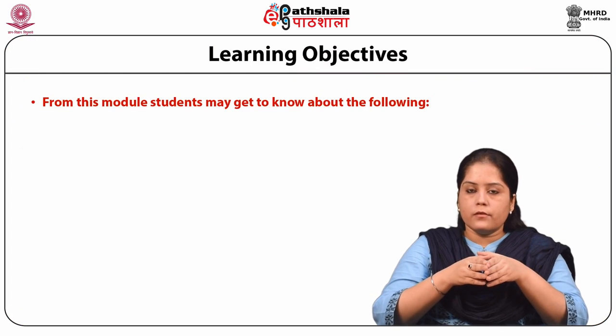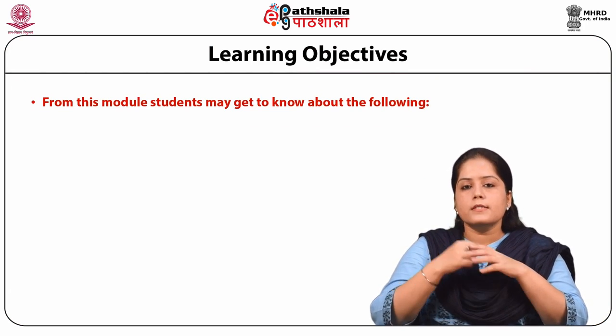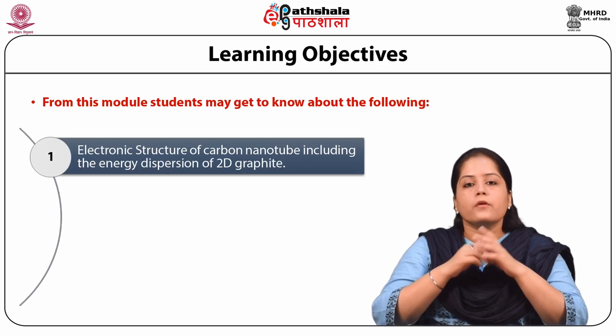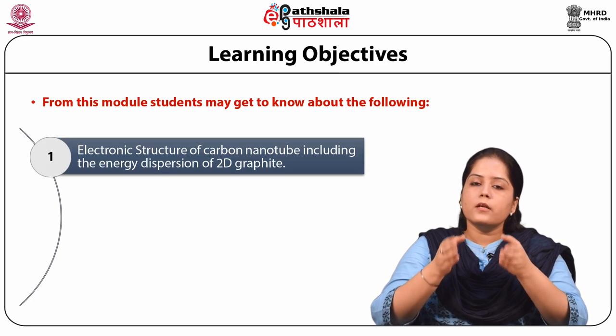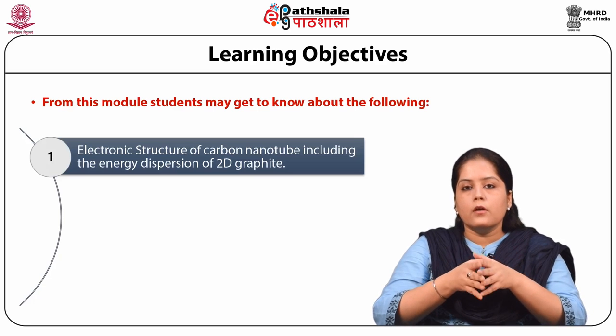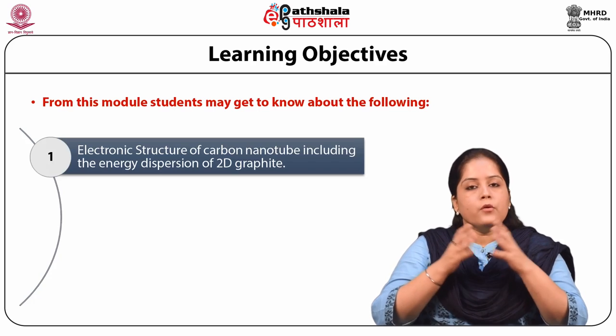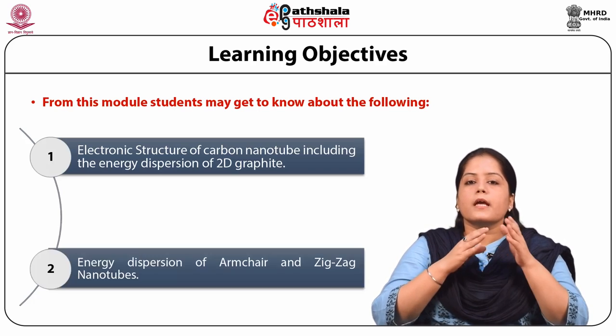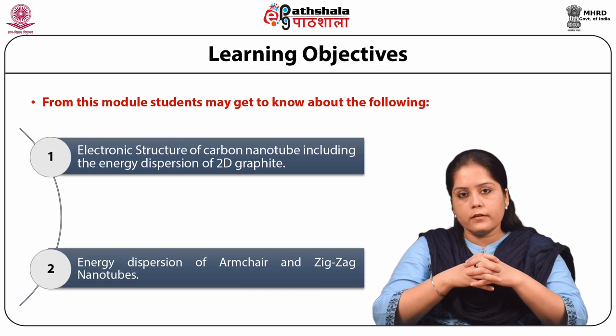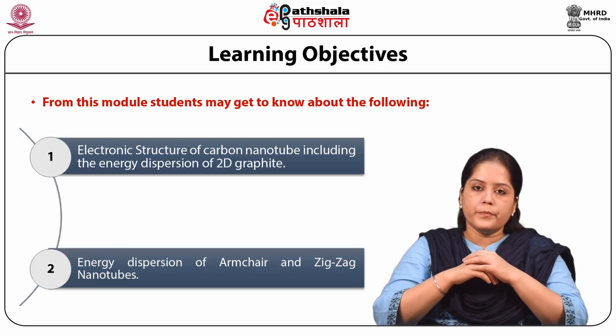Today we are going to discuss the module Electronic Structure of Carbon Nanotube from the paper Physics at Nanoscale. The learning objectives of this module are: first, the electronic structure of carbon nanotube including the energy dispersion of two-dimensional graphite will be discussed. Second, the energy dispersion of armchair and zigzag nanotubes will be discussed in this module.